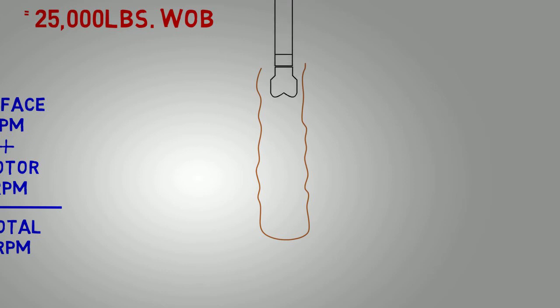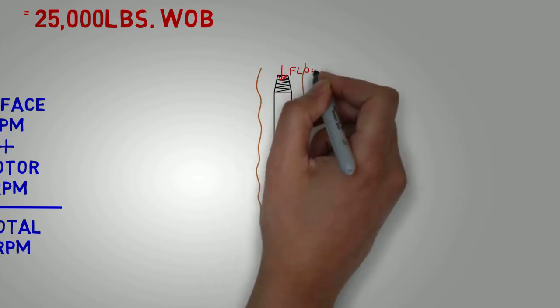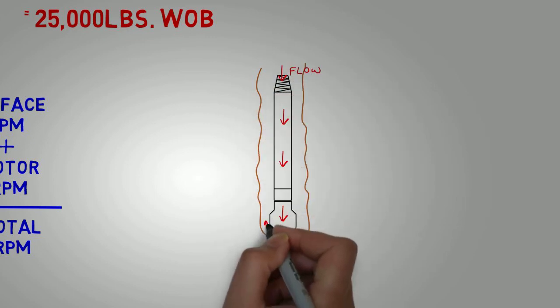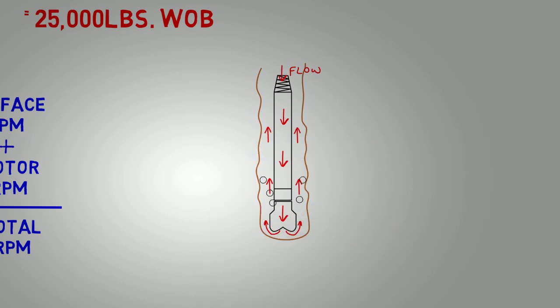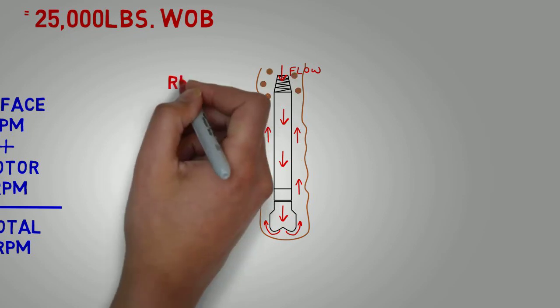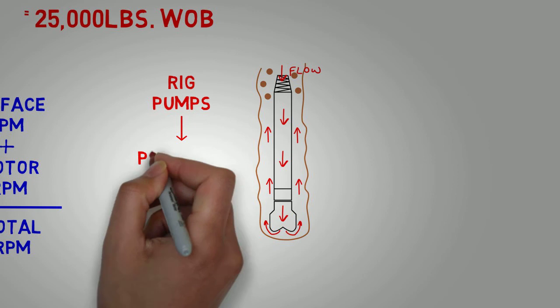Last but not least, hydraulic energy is what forces fluid to circulate through the drilling system. Drilling hydraulics are used to evacuate the drilled formation and to clean, cool, and lubricate the drilling components and the well. The rig pumps supply hydraulic energy by putting the drilling fluid under pressure to circulate.